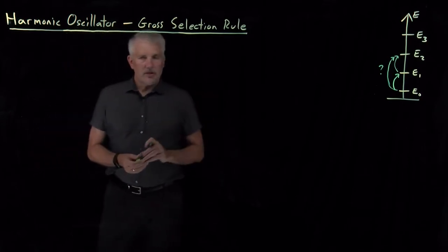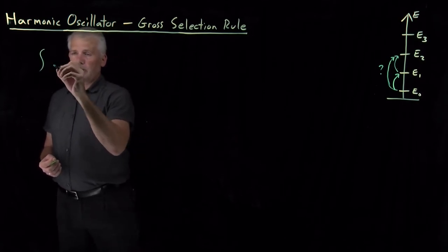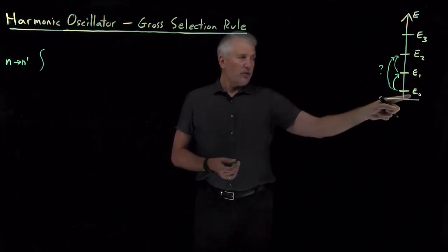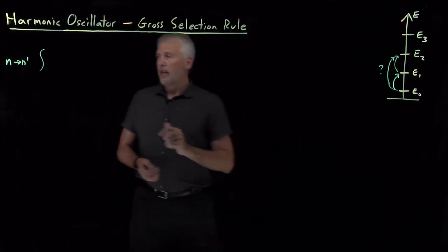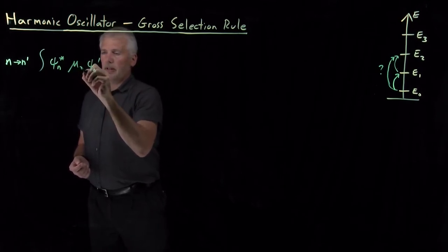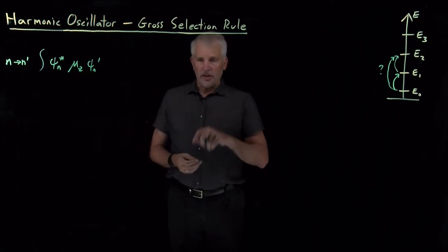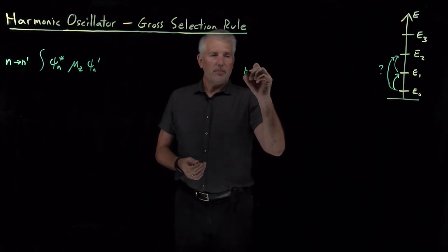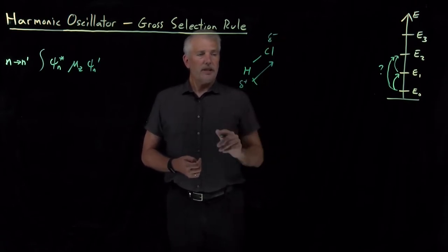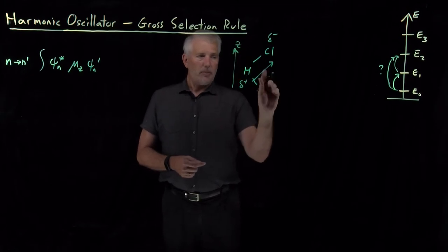The way we determine which transitions are allowed is by using the transition dipole moment for the molecules, which is proportional to a specific quantity. If I want to make a transition from the nth to the n-prime energy level, what I need to know is the integral of the wave function for the initial state and the wave function for the final state, sandwiched around the dipole moment of the molecule — specifically, the component of the dipole moment parallel to the oscillation of the light shining on the molecule.